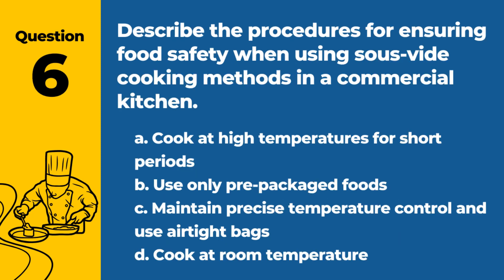Question 6. Describe the procedures for ensuring food safety when using sous vide cooking methods in a commercial kitchen. A. Cook at high temperatures for short periods. B. Use only pre-packaged foods. C. Maintain precise temperature control and use airtight bags. D. Cook at room temperature. Answer: C. Maintain precise temperature control and use airtight bags. Sous vide cooking requires maintaining precise temperature control and using airtight bags to ensure food safety.